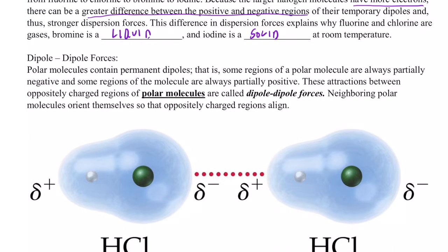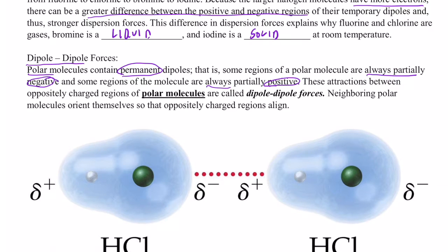The next type of intermolecular force of attraction is called a dipole-to-dipole force of attraction. If you have a polar molecule, they contain permanent dipoles — not temporary ones due to the undulation of the electron cloud, but permanent ones. Some regions of a polar molecule are always partially negative, and some regions are always partially positive. These attractions between oppositely charged regions of polar molecules are called dipole-to-dipole forces.